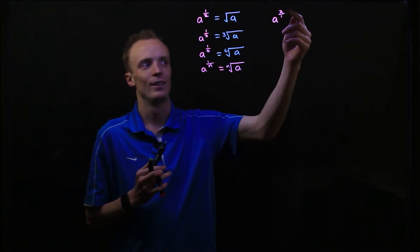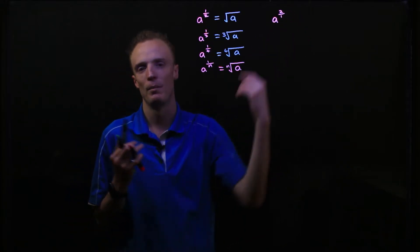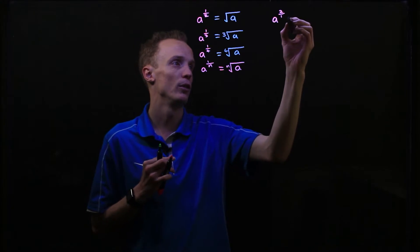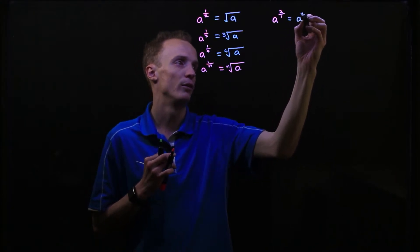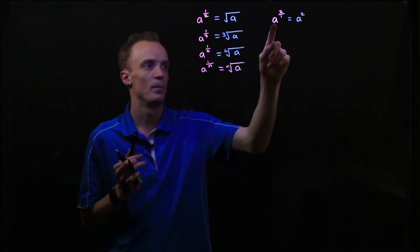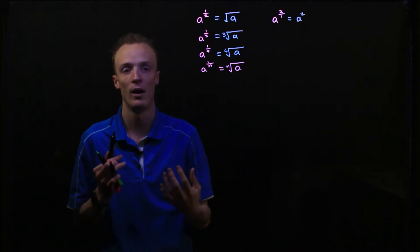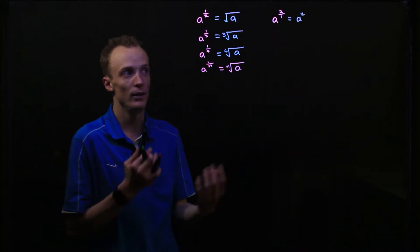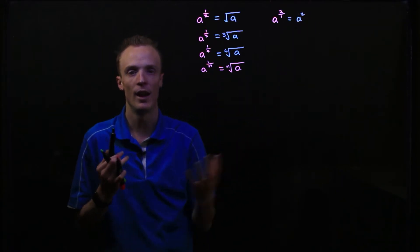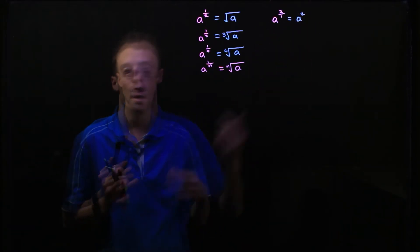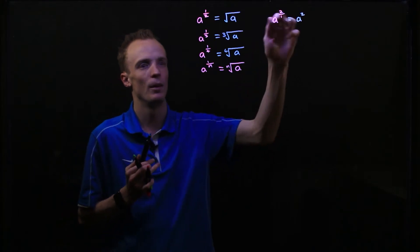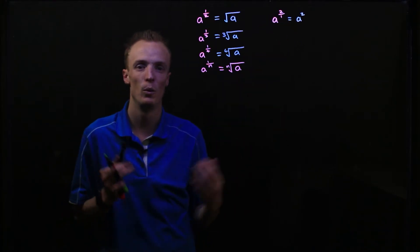Consider this: 2 divided by 1 is just going to leave a whole value of 2. So it's a to the power of 2, which means we take the base value and multiply it by itself twice. So anytime that we've got an integer index, our denominator is actually 1. What that means is we've essentially been dealing with these types of problems for some time.